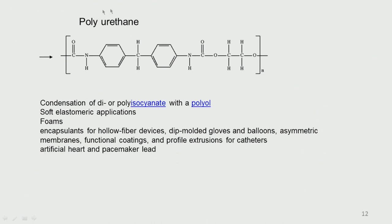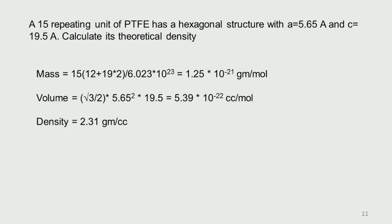Another polymer is polyurethane, which is like rubber. It is formed by condensation of a diisocyanate or polyisocyanate with a polyol (an alcohol). The polyol alcohol portion and the isocyanate bond are clearly visible in the structure. Polyurethane is used in soft elastomeric applications: foams, encapsulating hollow fiber devices, deep-molded gloves, balloons, asymmetric membranes, functional coatings, extrusion for catheters, artificial hearts, pacemaker leads, and urethral stents. Polyurethane is a very soft elastomer, while polycarbonate is a very hard engineering plastic.